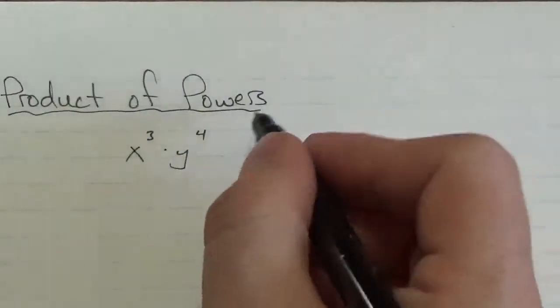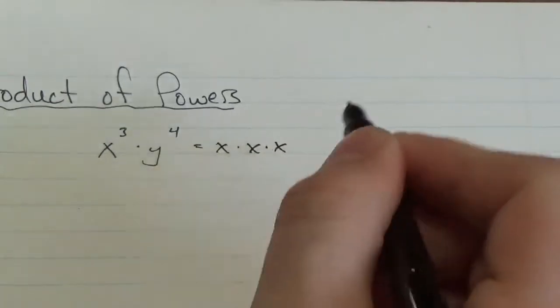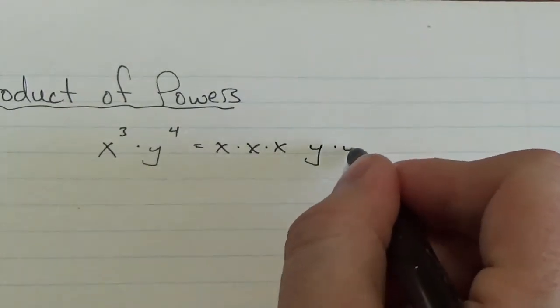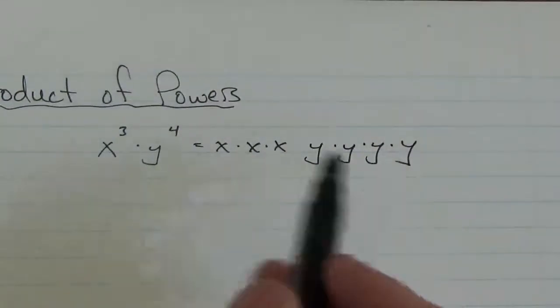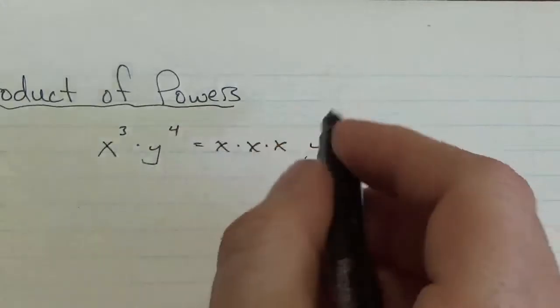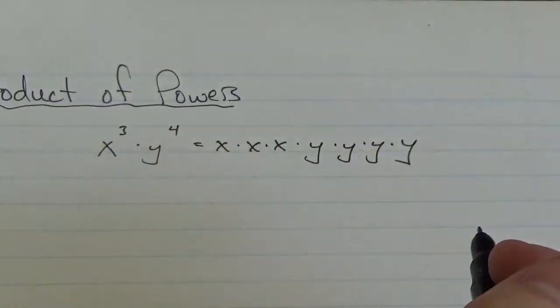And so this actually could be equivalent here to x times x times x and then y multiplied by y multiplied by y multiplied by y. So I've got four factors of y, three factors of x. And then it's multiplication in between, so I multiply them all together. So it's always multiplication all the way through here.